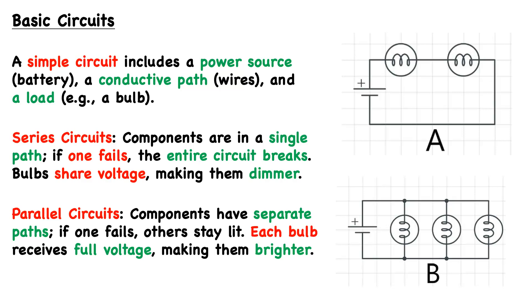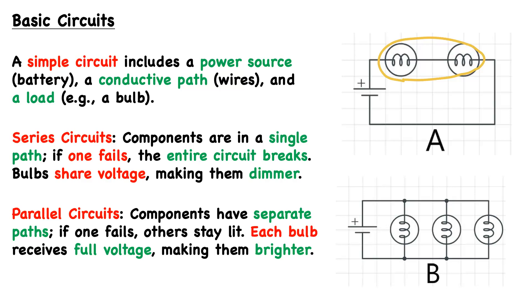Now let's consider the two main configurations for basic circuits: circuits in series and circuits in parallel. For a circuit in series, components are in a single path, which means that if one component fails, the entire circuit breaks. In the context of a circuit powering bulbs, the bulbs share voltage, which makes them relatively dimmer. In diagram A, these two bulbs are in series. If this first bulb fails, the second necessarily fails as well, because no current can continue on to it.